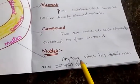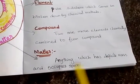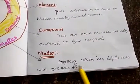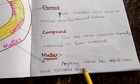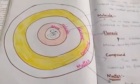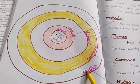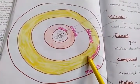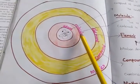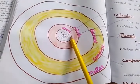Finally, matter is anything which has definite mass and occupies space. Matter has compounds; compounds have elements; elements have molecules; and molecules have many atoms.